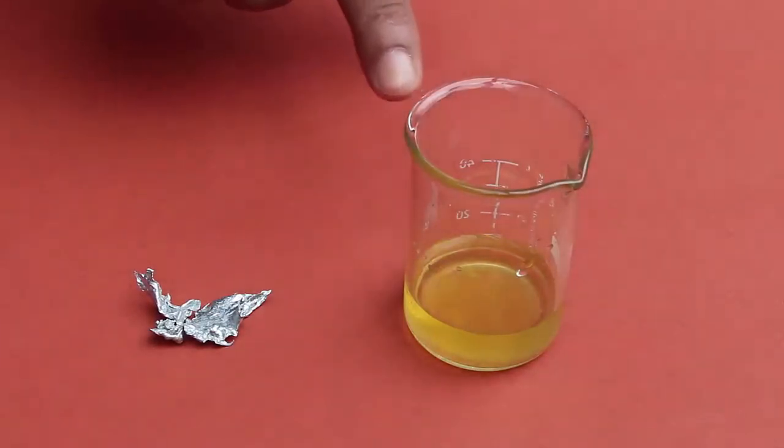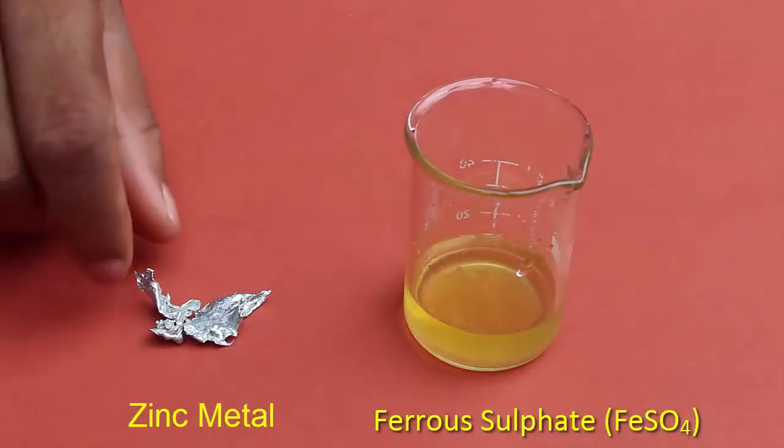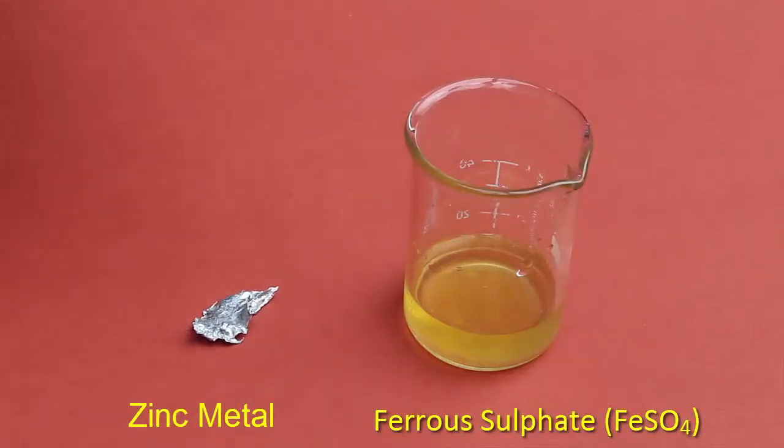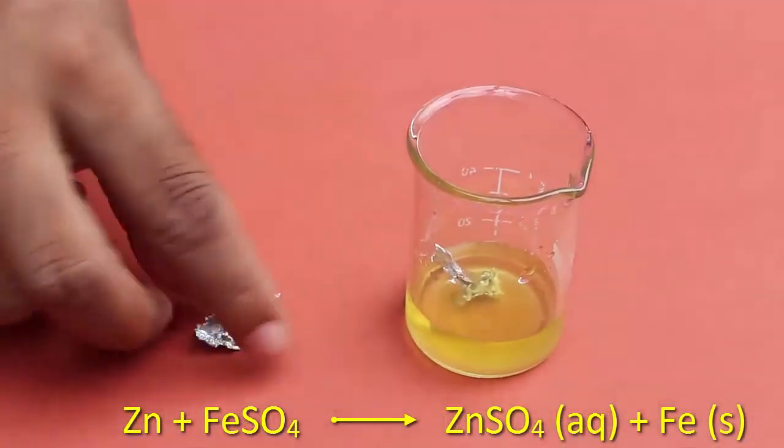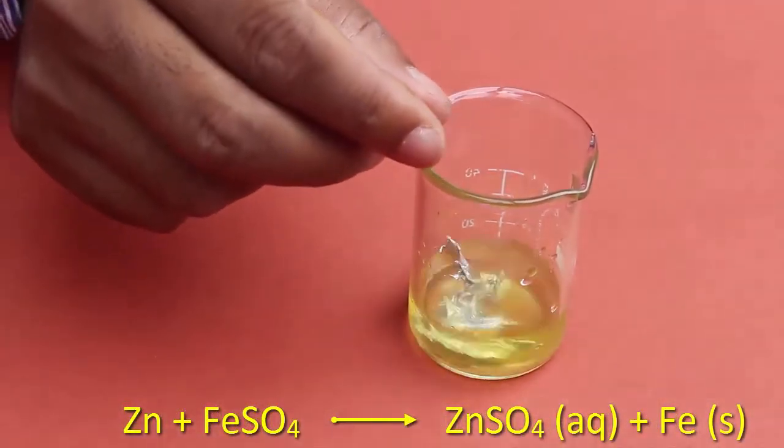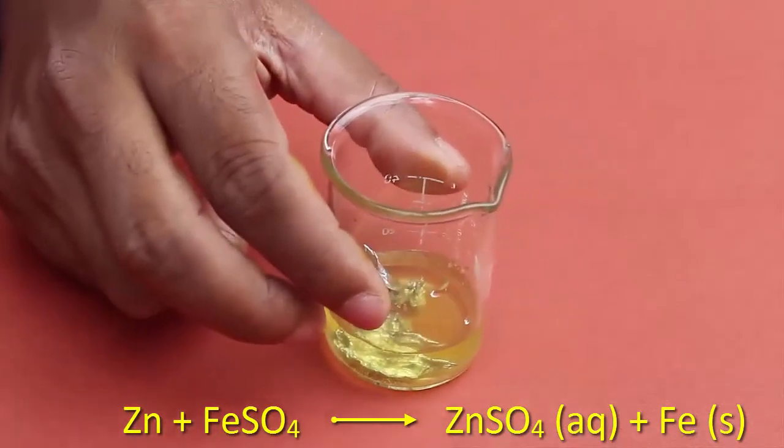Now to this solution of ferrous sulfate, we will add a few pieces of zinc metal. You will have to wait for a while because it will take a little time before the reaction starts.